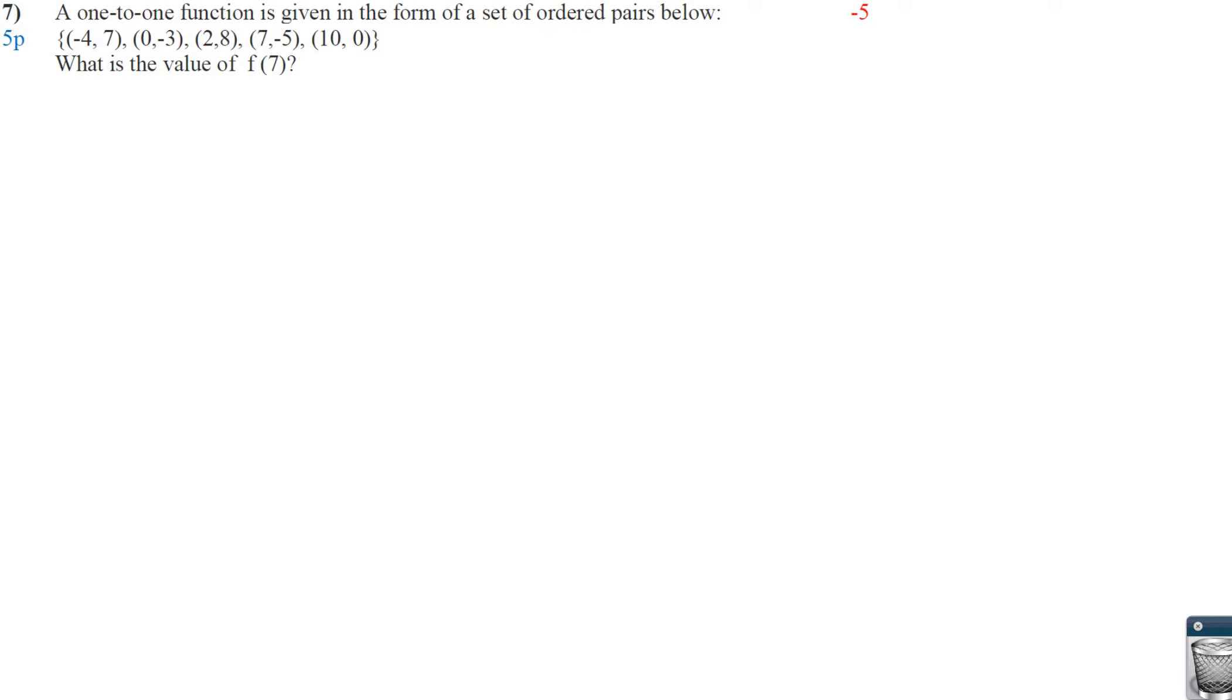A one-to-one function. So that means that only one x value corresponds to one y value. And it passes that vertical line test. It's a function. So if this is the original function, so this comes from f of x. Then that means that the inverse... I guess we don't really need to answer that. That's for the next part. So we want to find f of 7. So if x is 7, then what is y? So we go over here. x is 7 right here. So y is negative 5.